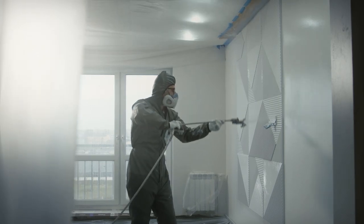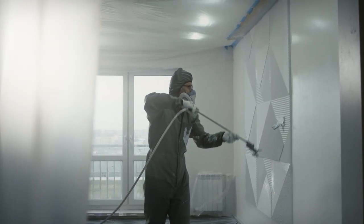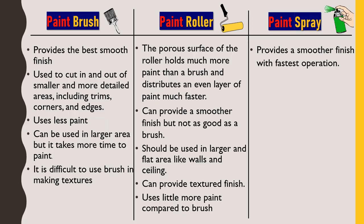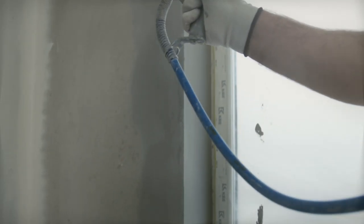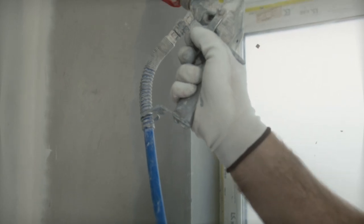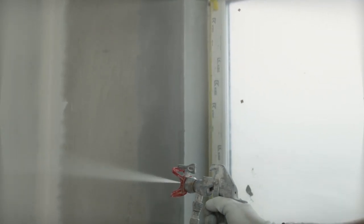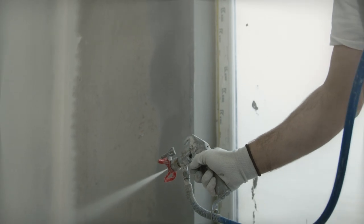Paint spray provides a smoother finish with the fastest operation — we get a smooth and even finish, and the painting operation is very fast compared to brush and roller. However, it uses more paint. The spray cannot be used to paint detailed areas — small, complicated areas like corners and edges cannot be painted with a spray gun; these need a brush. Additionally, things and places which are not to be painted need to be covered carefully, as spraying might spoil those areas.